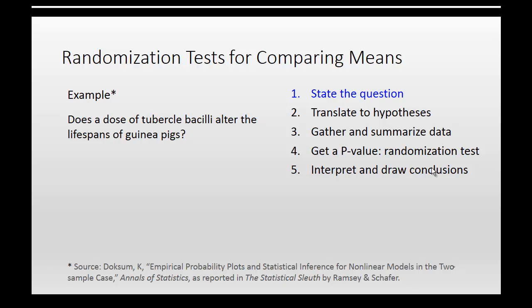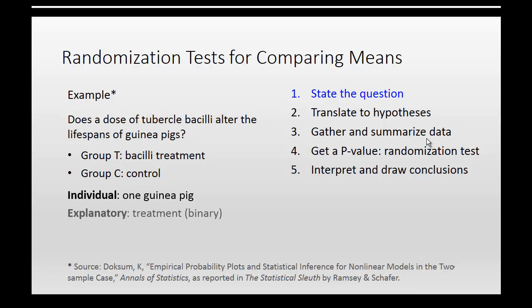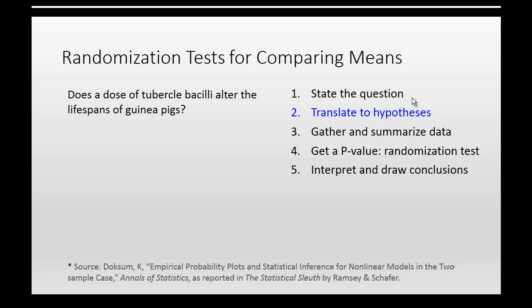Here's the example we have in mind. It comes from The Statistical Sleuth by Ramsey and Schaefer: does a dose of tubercle bacilli alter the lifespans of guinea pigs? We're going to take some guinea pigs and randomly assign them to one of two groups. One group gets the bacilli treatment, the other is a control group. An individual is one guinea pig. Our explanatory variable is the treatment — bacilli or control — and the response variable is the lifespan of the guinea pigs measured in days.